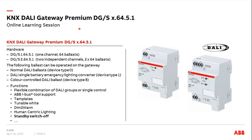At the beginning, a short overview of both DALI Gateway Premiums. Both devices are identical in functions but differ in the number of DALI outputs. The DGS 16451 has one channel with a maximum of 64 ballasts, and the DGS 26451 has two independent channels with two times 64 ballasts.